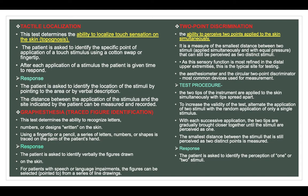Graphesthesia — traced figure identification: this test determines the ability to recognize letters, numbers or designs written on the skin. Using a fingertip or pencil, a series of letters, numbers or shapes is traced on the palm of the patient's hand. Response: the patient is asked to verbally identify the figures drawn on the skin. For patients with speech or language impairments, the figures can be selected or pointed to from a series of line drawings.